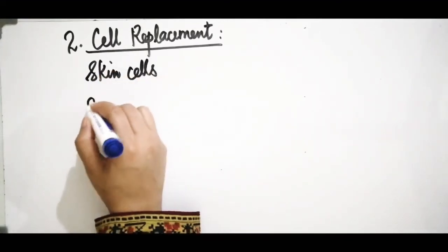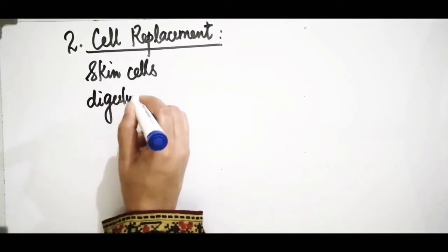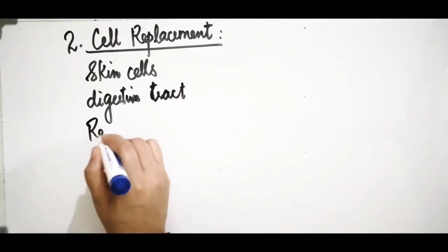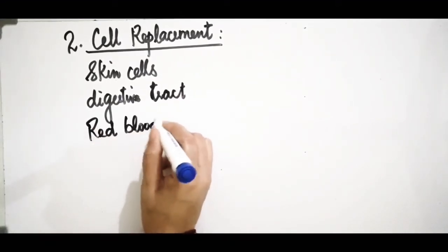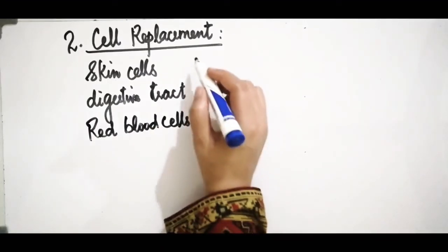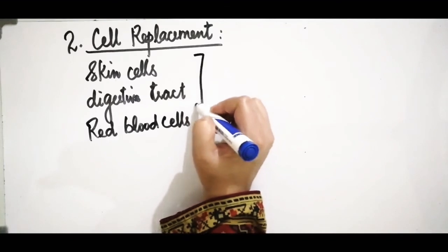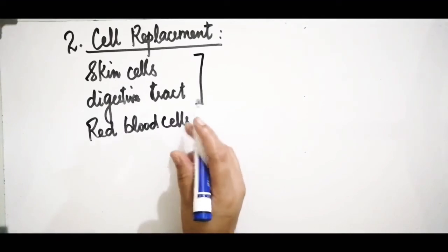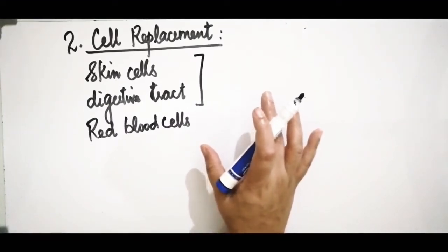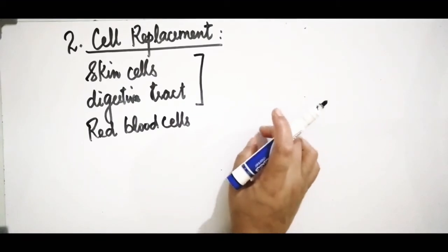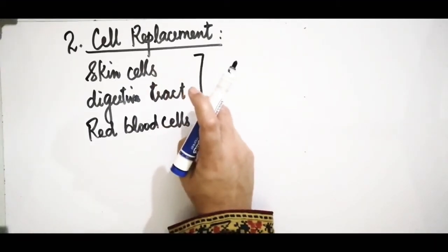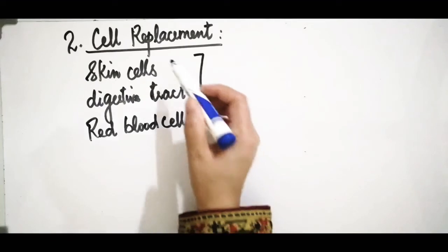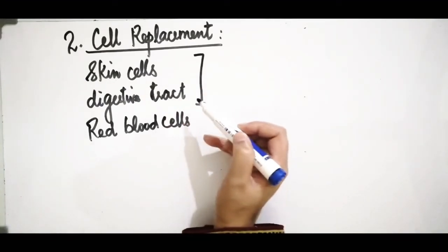The cells involved in replacement inside the human body are skin cells — also called epithelial cells — cells of the digestive tract, and red blood cells. Skin cells and digestive tract cells are constantly sloughed off and damaged, and by mitosis new cells replace them. Exact copies of the skin cells and digestive tract cells are formed again.